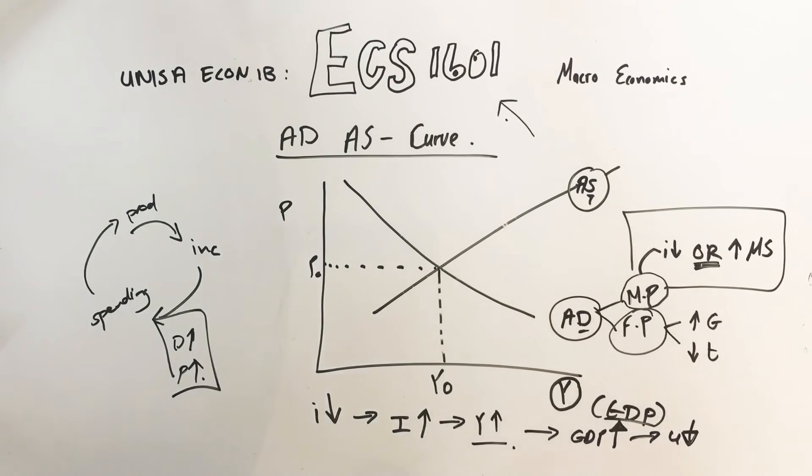This is very much in a nutshell, but that's the AD-AS curve. So just for the exam, it's the AD-AS curve, you've got your aggregate demand, aggregate supply, you have your Y over here and your price level over there. The only thing that moves the aggregate demand is monetary policy or fiscal policy, demand management strategies. If it moves that way, it is...